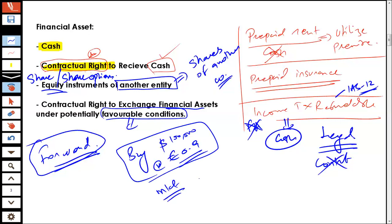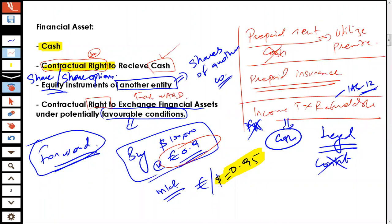In the market, what actually happens is the exchange rate goes up to euro point nine five. But even if the exchange rate goes up to point nine five, the applicable rate is going to be point nine. So we are going to say that we have a contractual right — this forward contract is arising out of a contract which gives us a right to exchange financial assets under potentially favorable conditions. That's what this forward contract is going to give you.